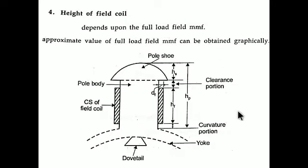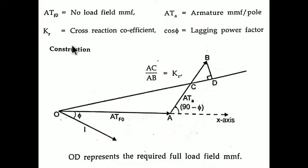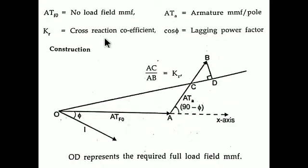To find the full load field MMF, you need five values: ATf0 (no-load field MMF), ATa (armature MMF), kr (cross-reaction coefficient), and cos φ (lagging power factor). ATf0 is found using the standard formula already discussed. ATa is found using the armature MMF formula. The cross-reaction coefficient kr is obtained either from a kr-versus-ψ graph or from open-circuit and short-circuit test curves.